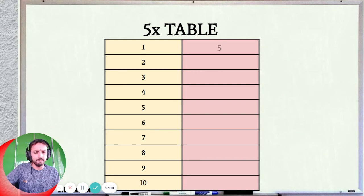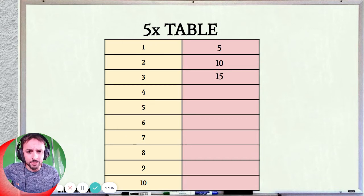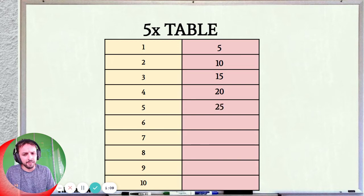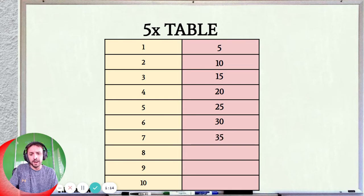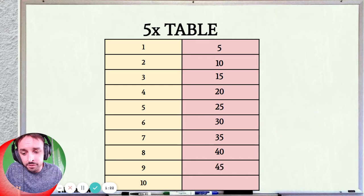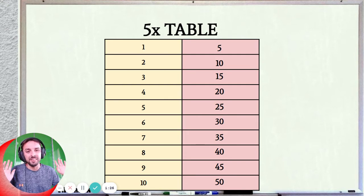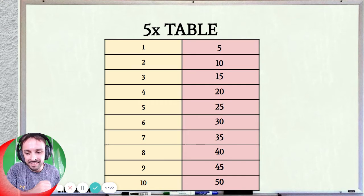So 1 times 5 is 5. 2 times 5 is 10. 3 times 5 is 15. 4 times 5 is 20. 5 times 5 is 25. 6 times 5 is 30. 7 times 5 is 35. 8 times 5 is 40. 9 times 5 is 45. 10 times 5 is 50. 11 times 5 is 55. And 12 times 5 is 60.